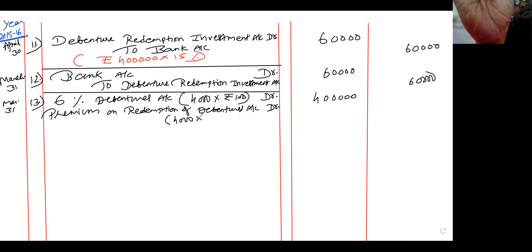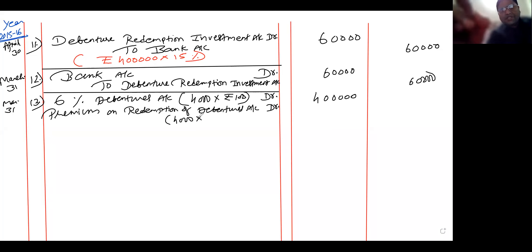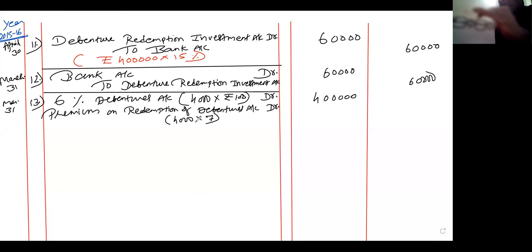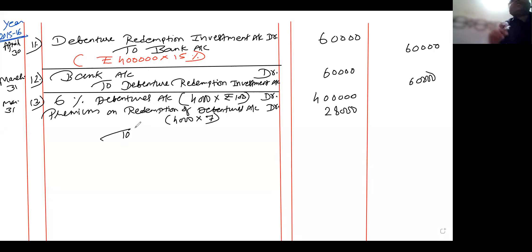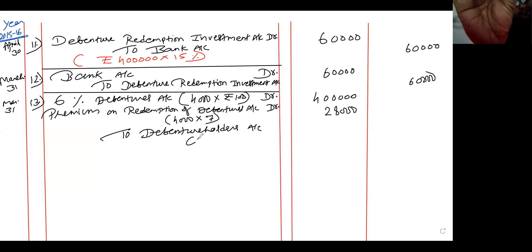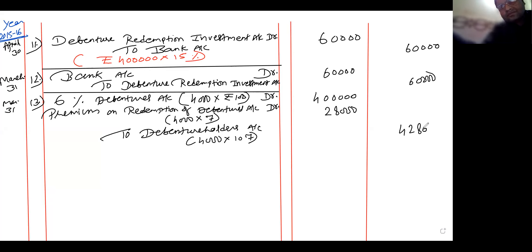The premium on redemption: redeemable at a premium of 7%, so 7% of 100 is 7. So 4,000 into 7 = 28,000. The liability goes to debenture holders account. 6% debentures 4 lakhs + premium on redemption of debentures 28,000 — to debenture holders account. Debenture holders are to receive 4,000 debentures at the rate of 107, which comes to 4,28,000.